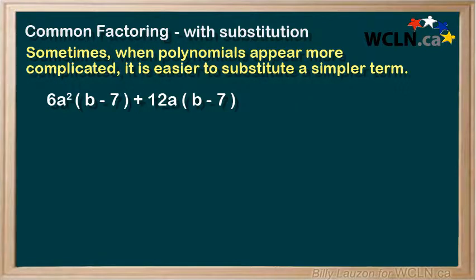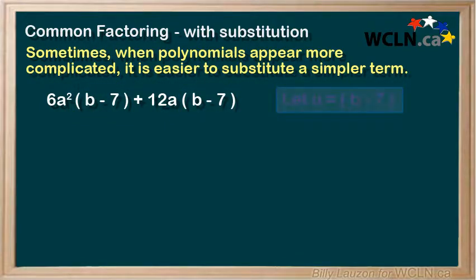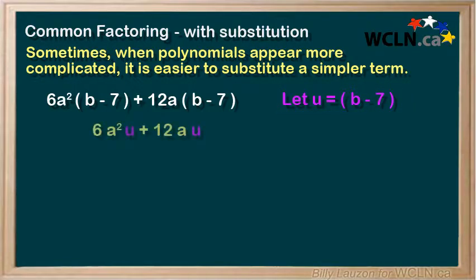Sometimes, when polynomials appear more complicated, it's easier to substitute in a simpler term to see what's going on. For this example, we'll notice that we have a b minus 7 in brackets. That might look intimidating, so what we can do is make a substitution. Let's let the letter u equal b minus 7. We can now replace the b minus 7 with u and rewrite our expression.